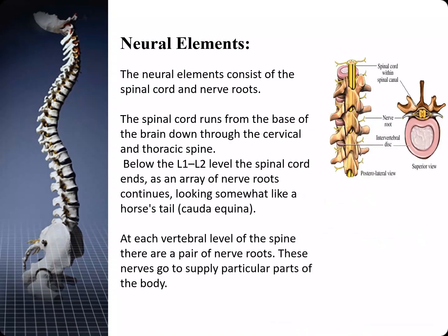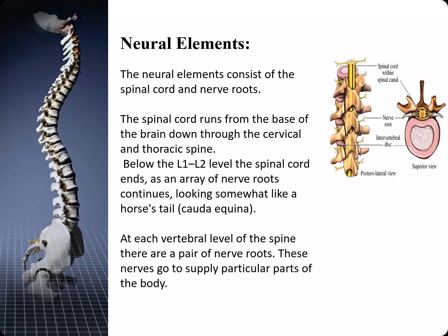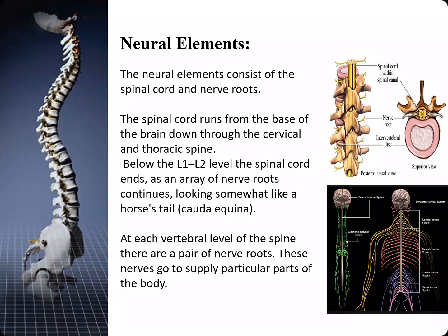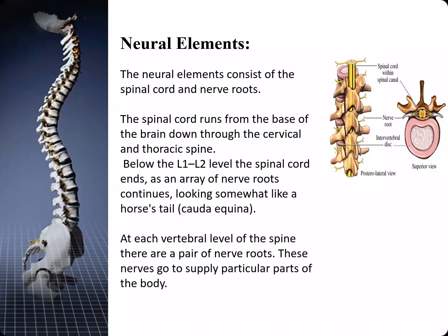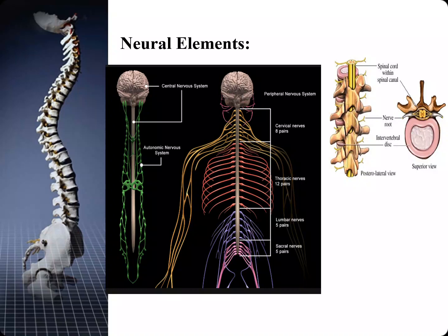The neural elements consist of the spinal cord and the nerve roots. The spinal cord runs from the base of the brain down through the cervical and thoracic spine. Below the L1 and L2 level, the spinal cord ends and a array of nerve roots continues, called the cauda equina. At each vertebral level of the spine, there are a pair of nerve roots that go to supply particular parts of the body.